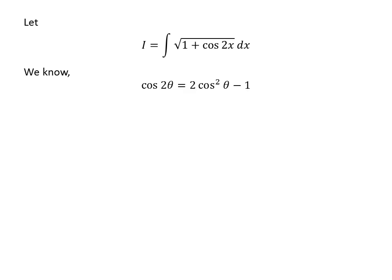We know the famous identity: for any angle theta, cosine of 2 theta is equal to 2 times square of cosine theta minus 1.